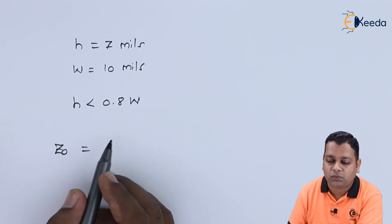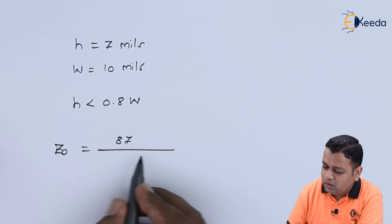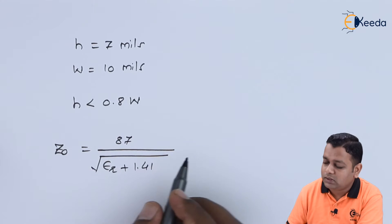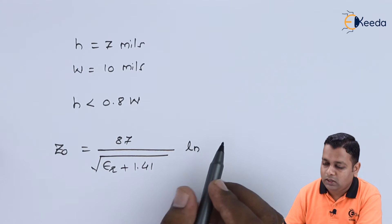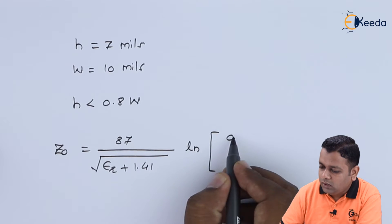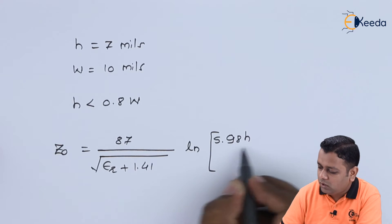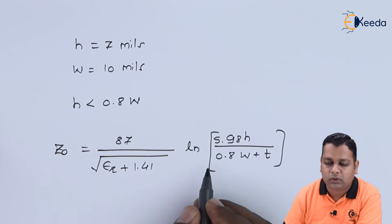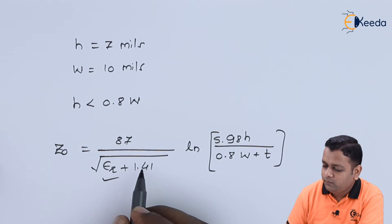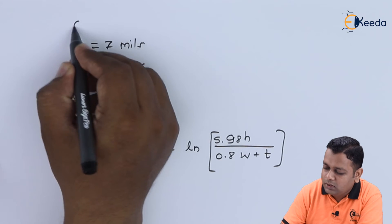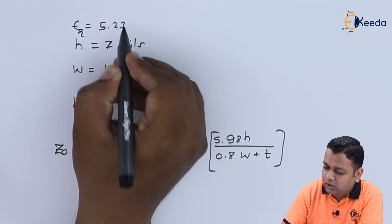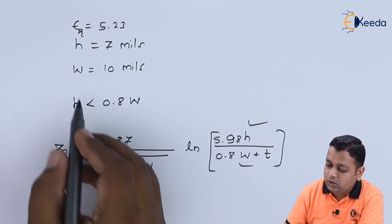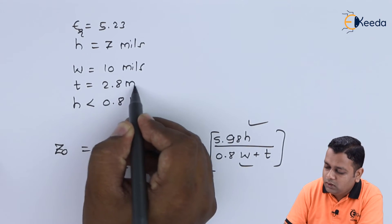The formula for Z0 is: Z0 = (87 / sqrt(epsilon_r + 1.41)) × ln(5.98h / (0.8w + t)). The required values from the problem statement are: epsilon_r = 5.23, h = 7 mils, w = 10 mils, and t = 2.8 mils. All values are available for substitution.